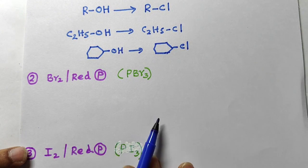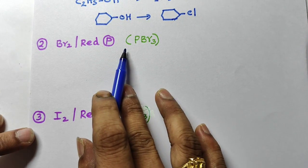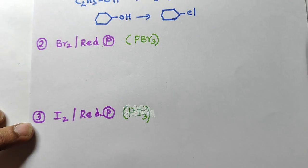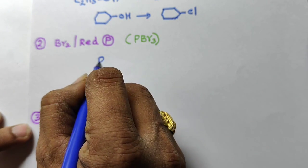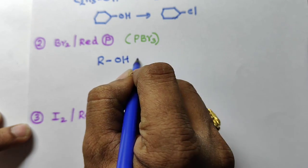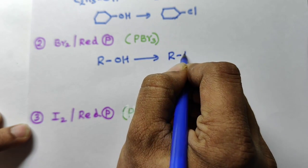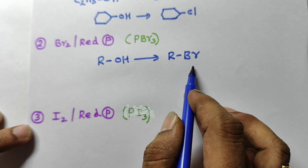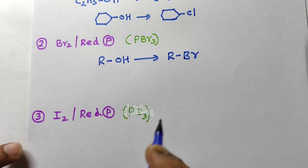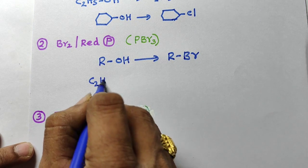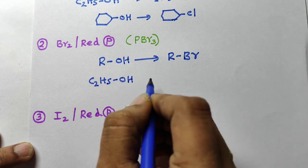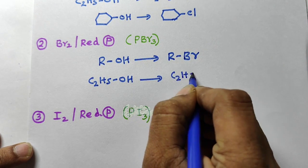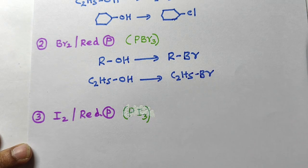Second reagent: bromine and red phosphorus. Bromine and red phosphorus give PBr3. The purpose of this reagent is alcohol is converted into alkyl bromide — this is the brominating agent. OH is replaced by bromine. For example, C2H5OH, ethyl alcohol, when treated with PBr3, gives C2H5Br, ethyl bromide.